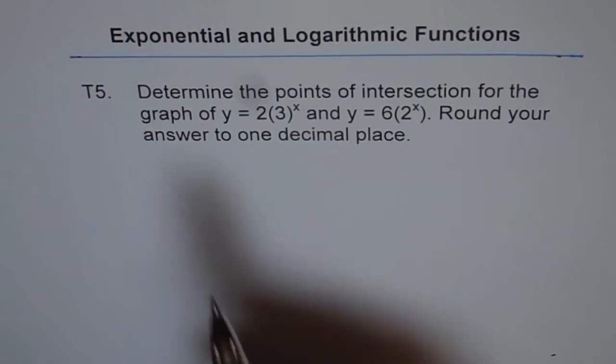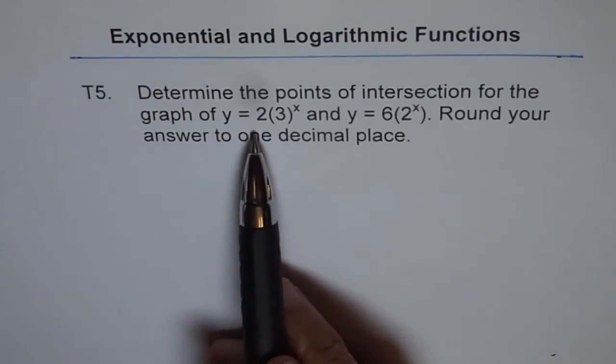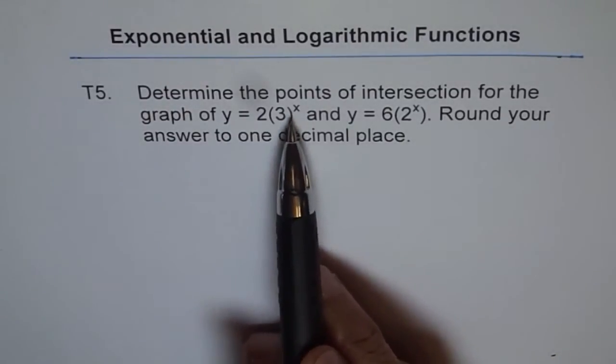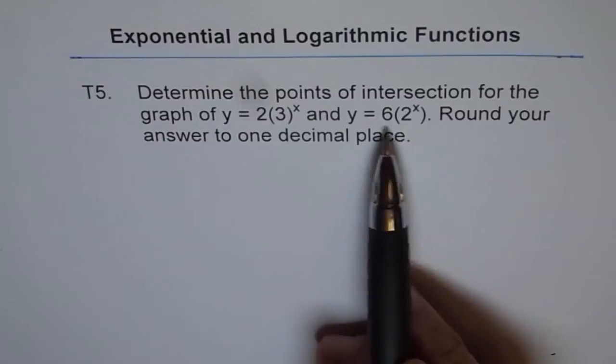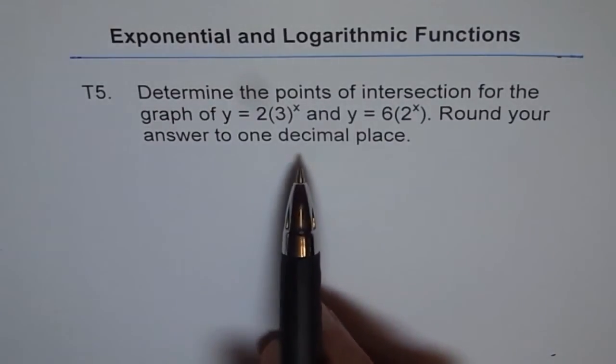Let's think about problem 5. Determine the points of intersection for the graph y equals 2 times 3 to the power of x and y equals 6 times 2 to the power of x. Round your answer to one decimal place.